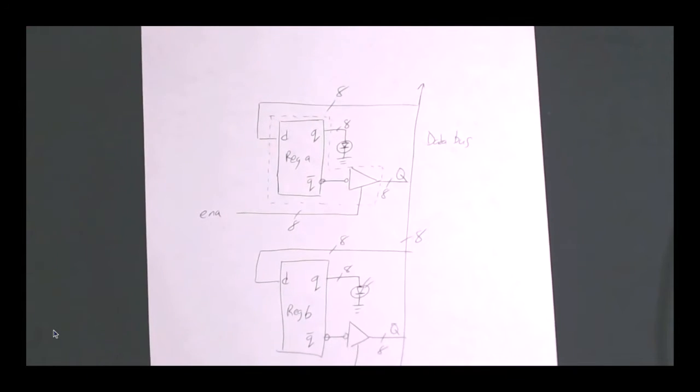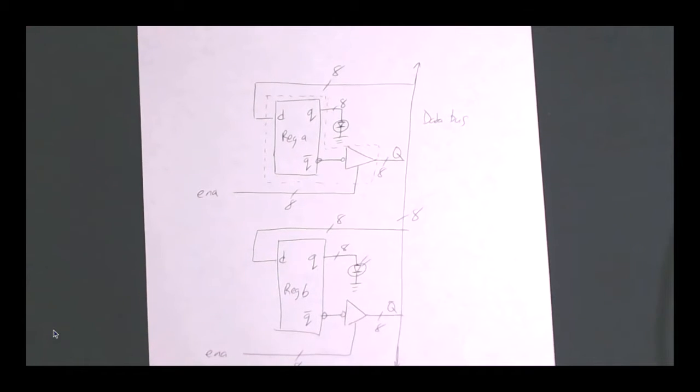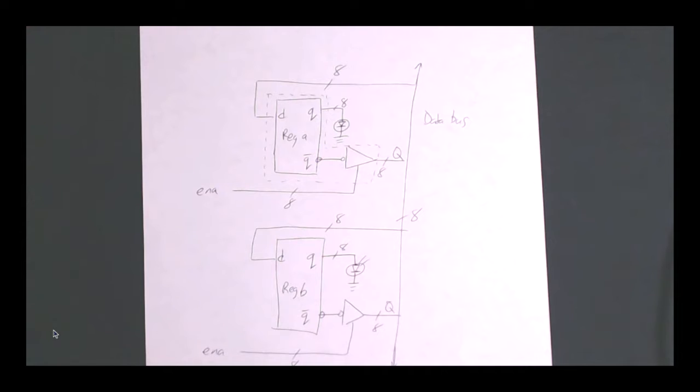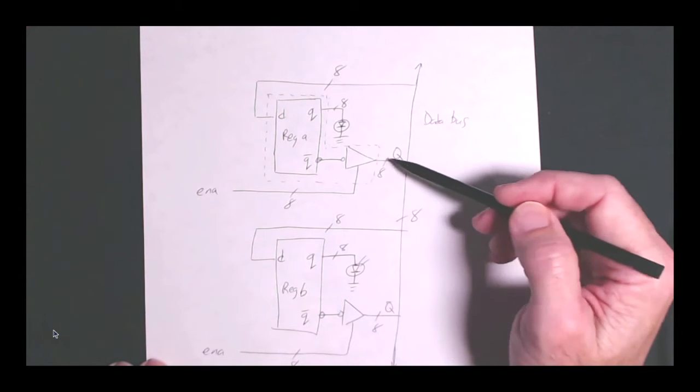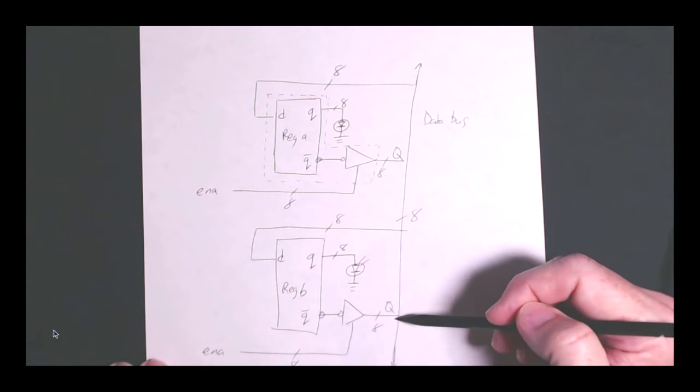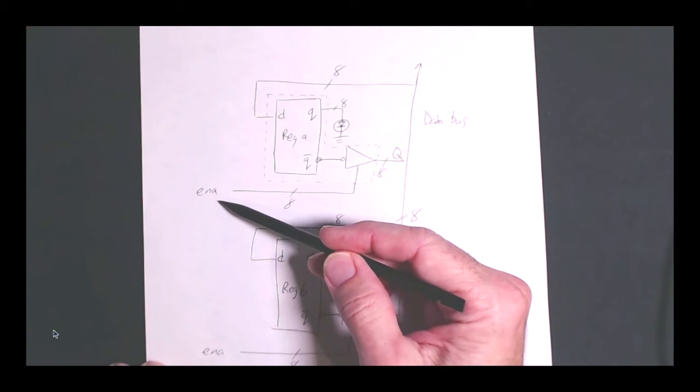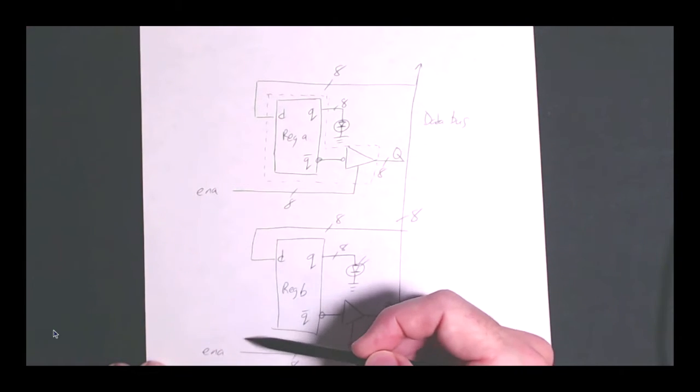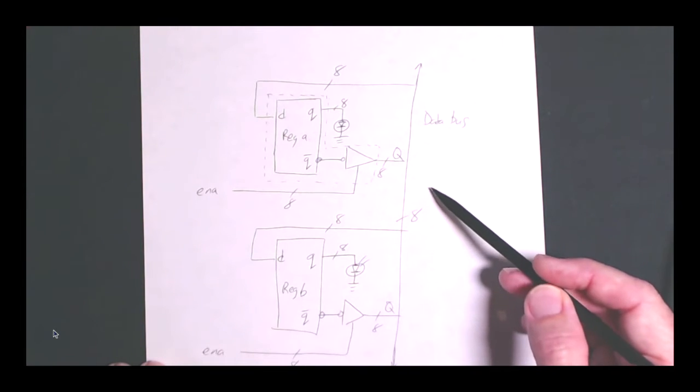So the next step would be to take our register and try implementing two registers together connected via a data bus, which means taking the output from each register and connecting it to the data bus and then demonstrate enabling one or the other and seeing the output come out on the data bus.